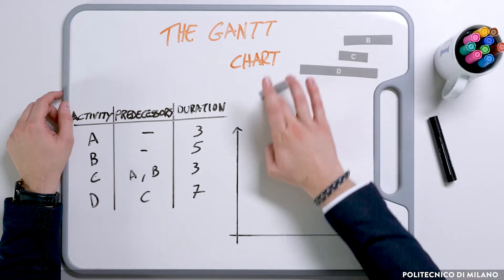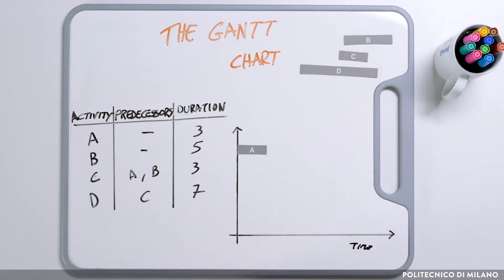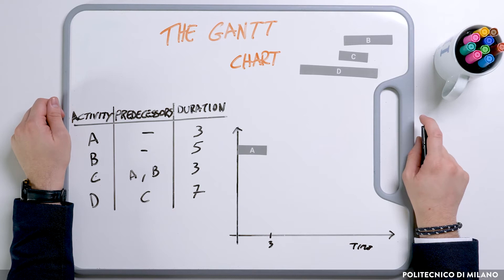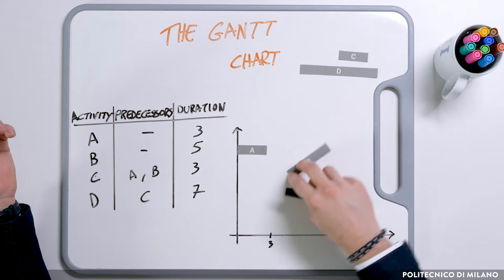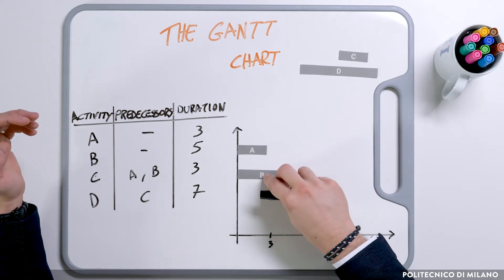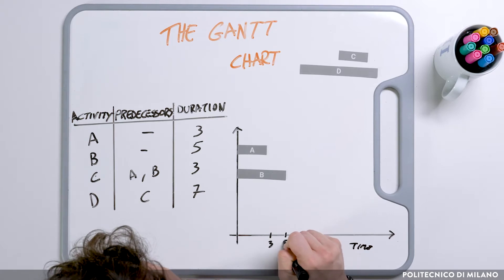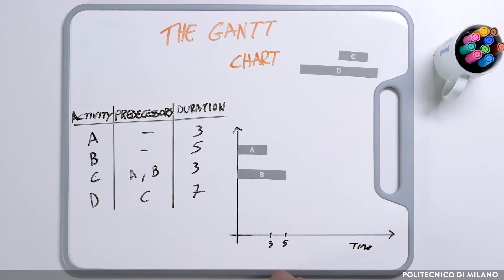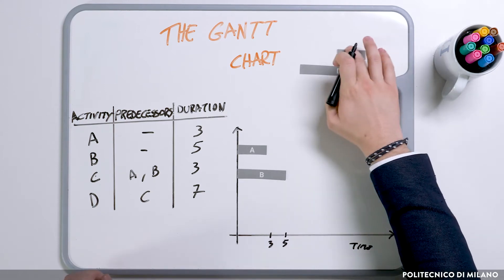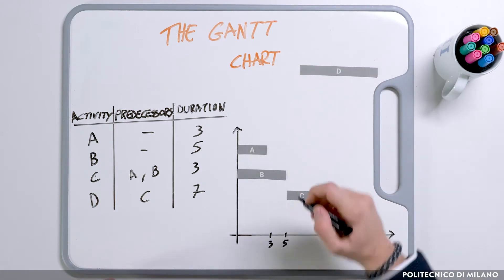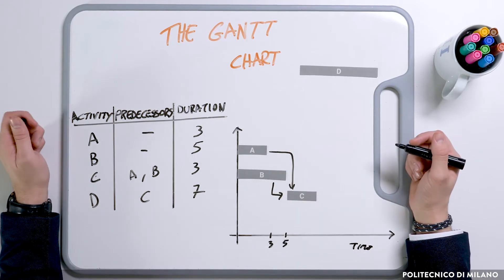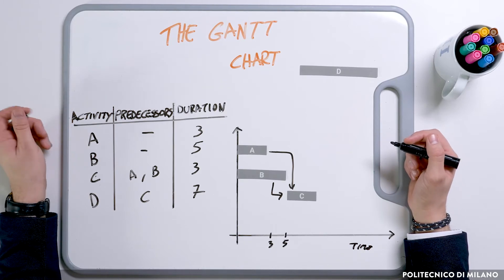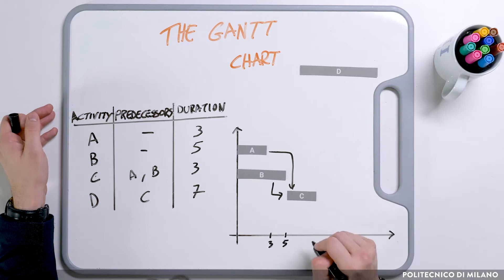Activity A is planned to start at 0 and end at 3, since it has no predecessors. Activity B is also planned to start at 0, since there are no predecessors in this case either, but it lasts 5, so it will end at 5. Activity C is different — it has two predecessors, A and B, therefore it needs to wait for both activities to end before it can start. Lasting 3, it will start at 5 and finish at 8.